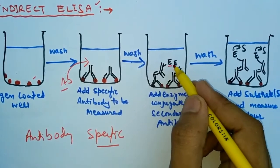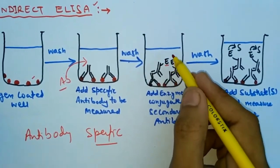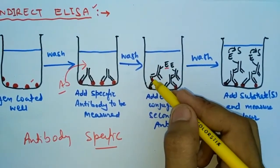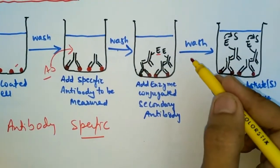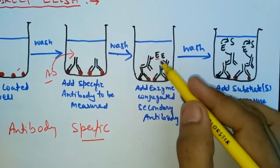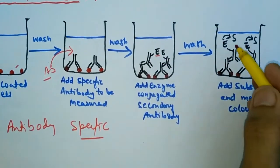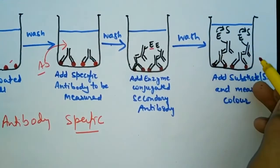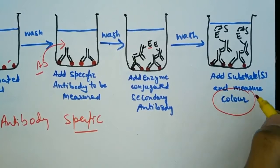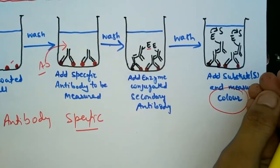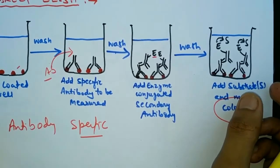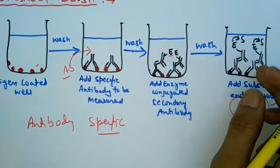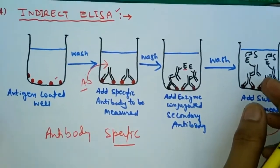Then we add a secondary antibody — they are enzyme-linked in the Fc region of the secondary antibody. The enzyme is linked, and the secondary antibody fuses with the primary antigen-antibody complex. We again wash out the unbound secondary antibody, then add a substrate that upon reaction with the enzyme produces a color. The type of color produced identifies the antibody we have isolated.